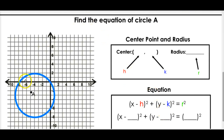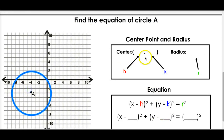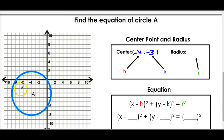Let's find the equation of circle A over here. First let's find the center and radius. The center is at (-4, -3). For the radius, we just count: 1, 2, 3, 4, 5. It doesn't matter where on the circumference you count to, as long as you start from the center - the radius will always be the same in any direction. So the radius is 5.